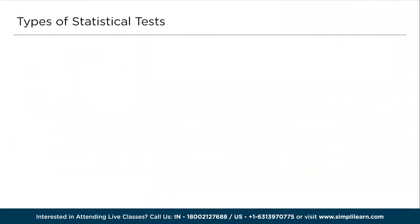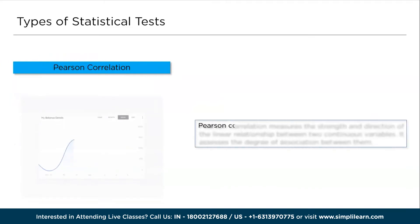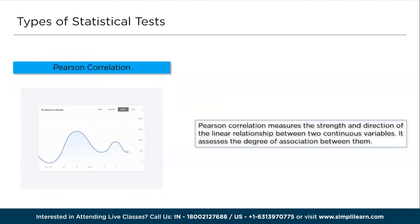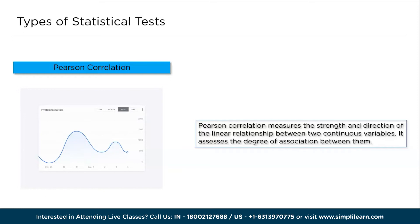Moving ahead, we have Pearson correlation. Pearson correlation measures the strength and direction of the linear relationship between two continuous variables and assesses the degree of association between them. Pearson correlation, also known as Pearson's correlation coefficient, is a statistical measure that quantifies the strength and direction of the linear relationship between two continuous variables.